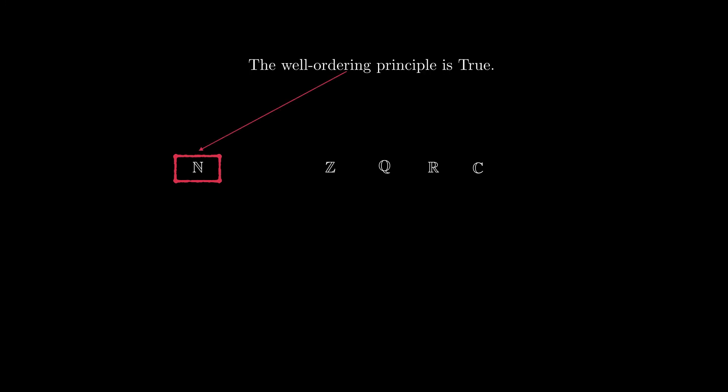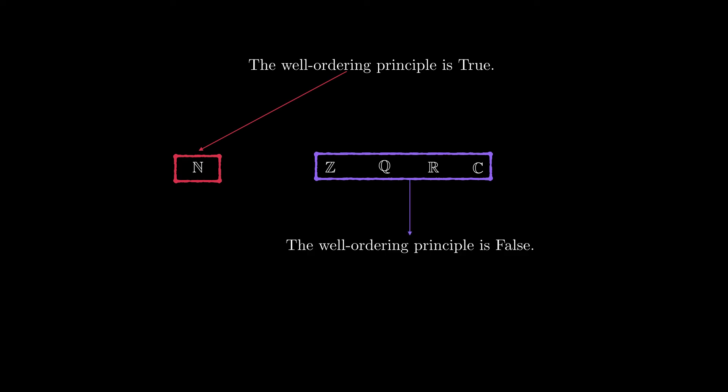To be specific: the natural numbers have the well-ordering principle — it is true for natural numbers. But for the other numerical sets — the integers, the rationals, the reals, and the complex numbers — the well-ordering principle is false. So this is a property that the natural numbers have that the other numerical sets do not.